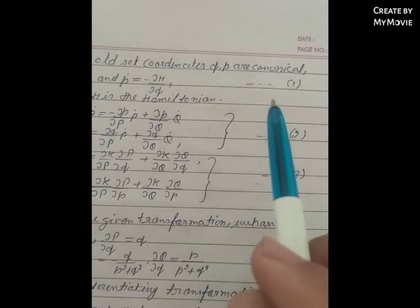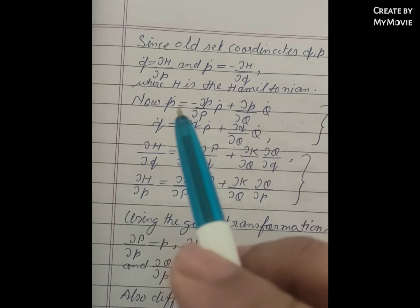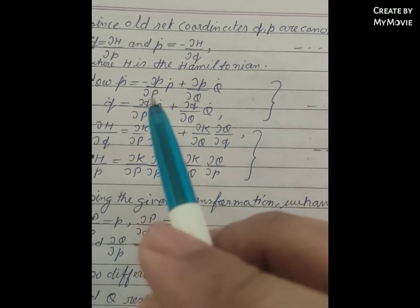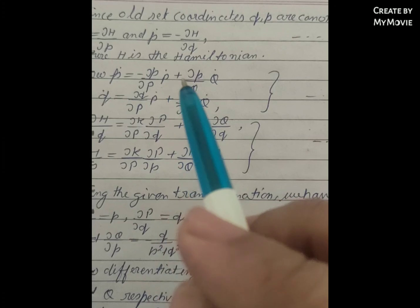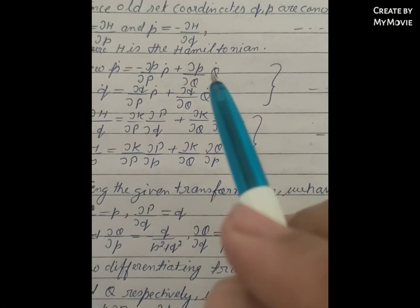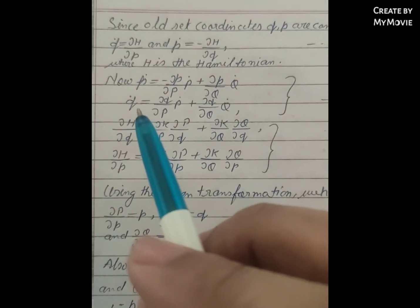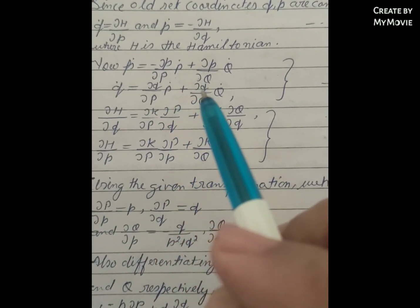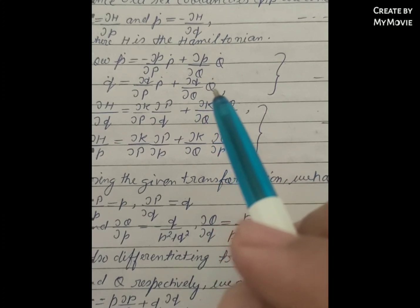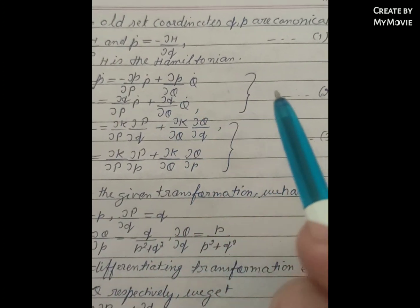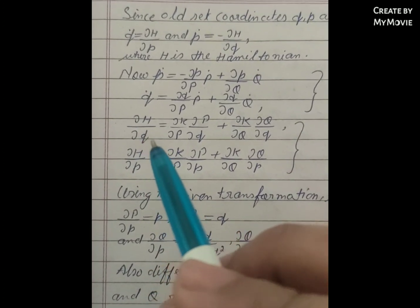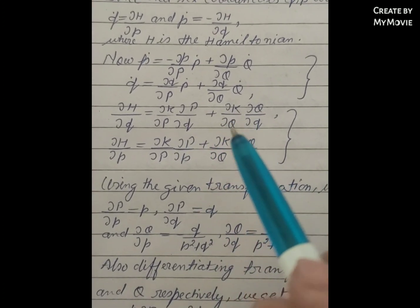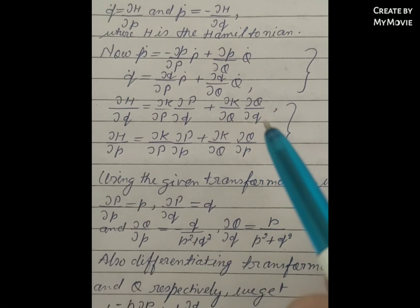Now ṗ = -(∂P/∂P)ṗ + (∂P/∂q)q̇ — this is equation 2. And ∂H/∂q = (∂K/∂P)(∂P/∂q) + (∂K/∂Q)(∂Q/∂q), and ∂H/∂p = (∂K/∂P)(∂P/∂p) + (∂K/∂Q)(∂Q/∂p) — these are equation 3.